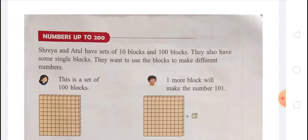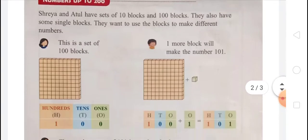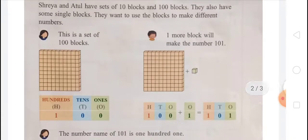One more block will make the number 101 — that is 1 block of 100 plus 1 single block, so 100 plus 1 equals 101. In 101, on the ones place there is 1, on the tens place there is 0, and on the hundreds place there is 1.